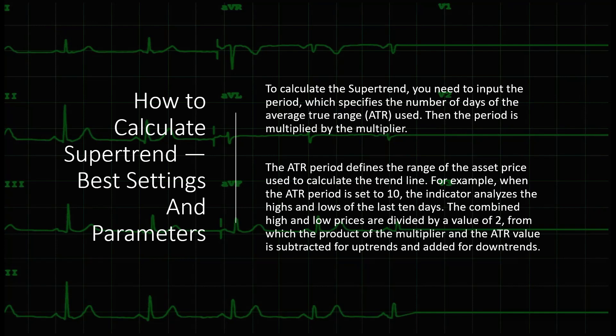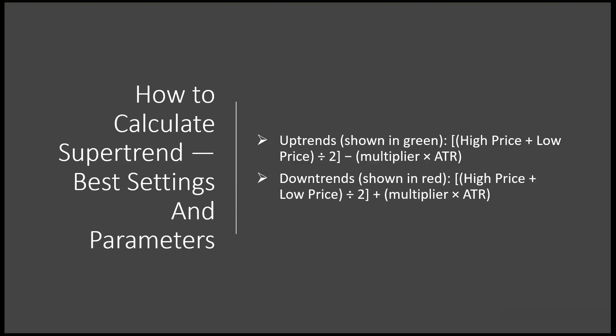To calculate the Supertrend Indicator — though you'll never have to, as it's dropped on your charts automatically — you need to input the period, which specifies the number of days of the ATR used. The Supertrend Indicator is an indicator of an indicator: it uses the basics of a different indicator and applies something different on top. The ATR period defines the range of the asset used to calculate the trend line. For example, when the ATR period is set to 10, the indicator analyzes the highs and lows over the last 10 days.